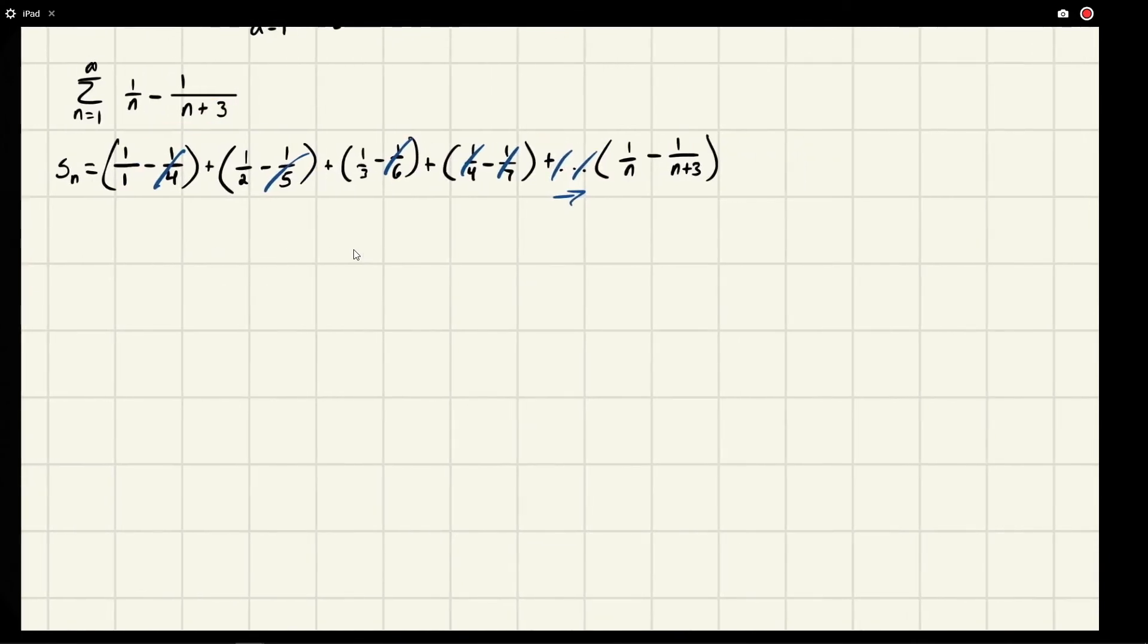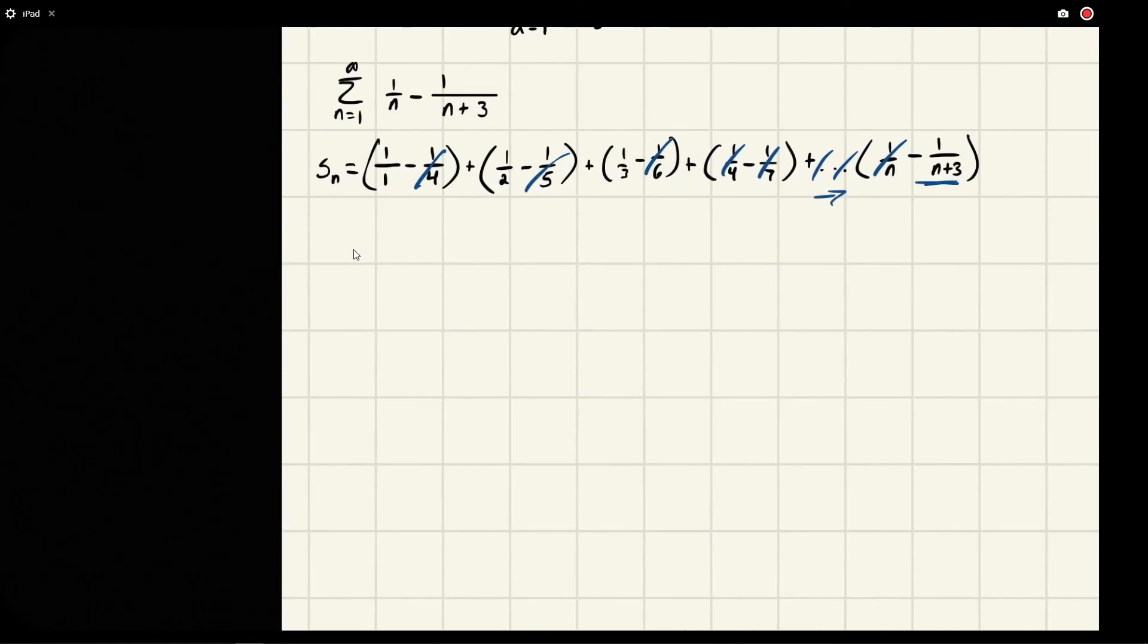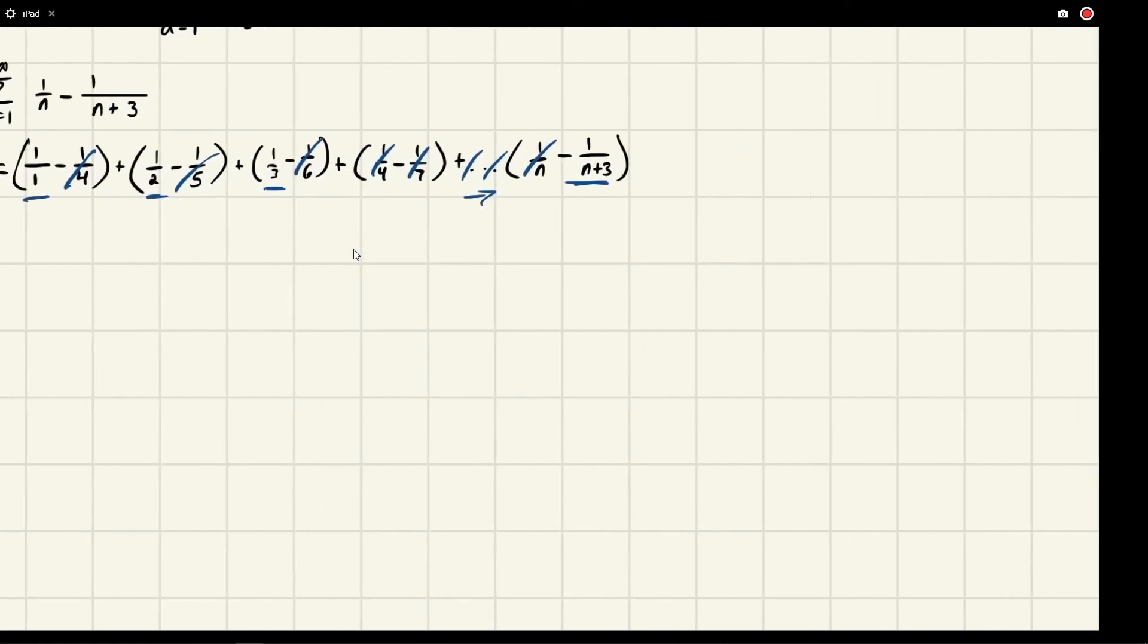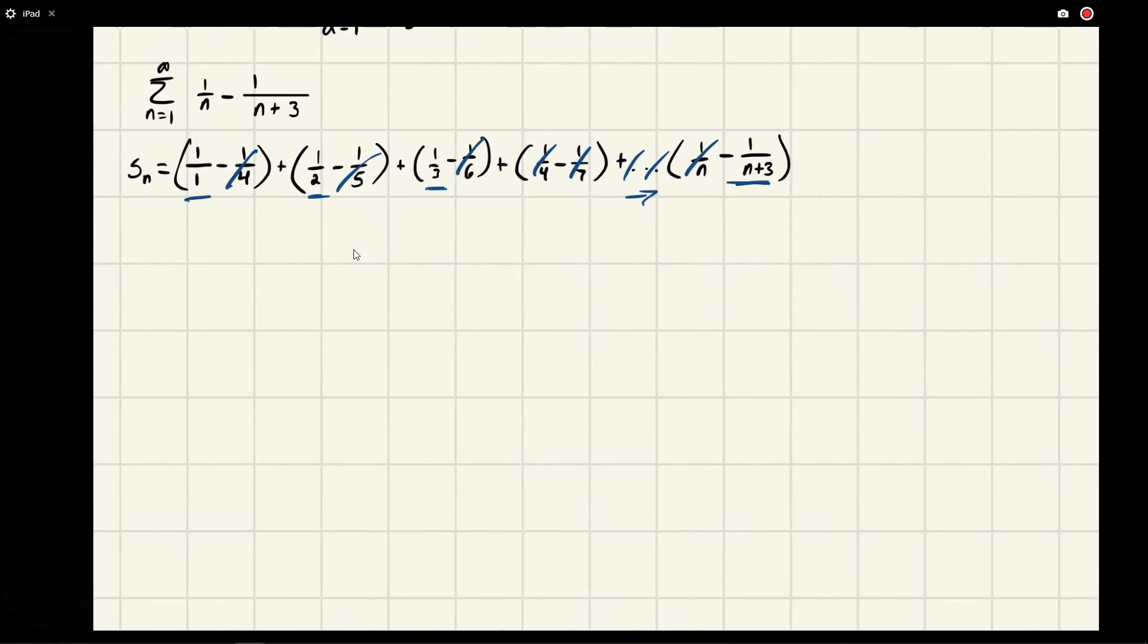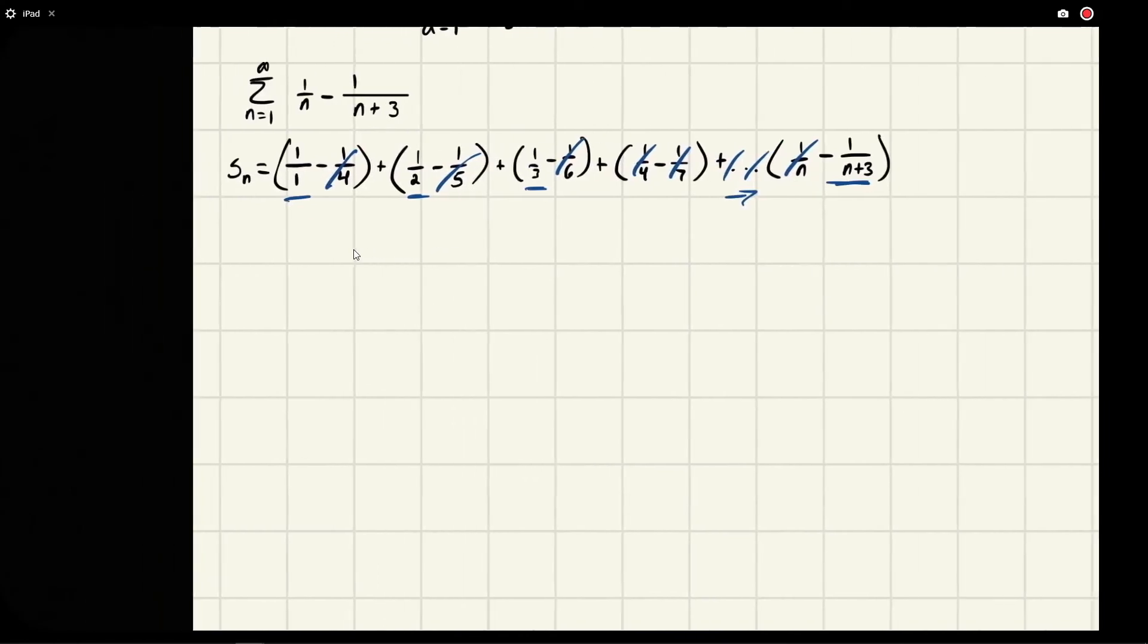Which we could tell just by looking at this, this 3 was very telling of that fact. And then this would go on and on and on until we cancel with the 1 over nth term, so we'd be left with the last term and these first three terms.